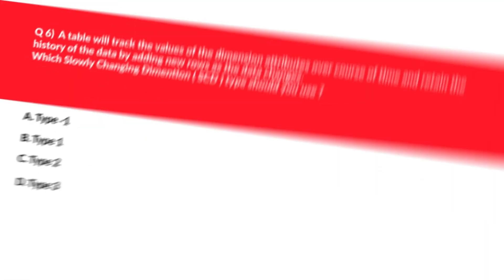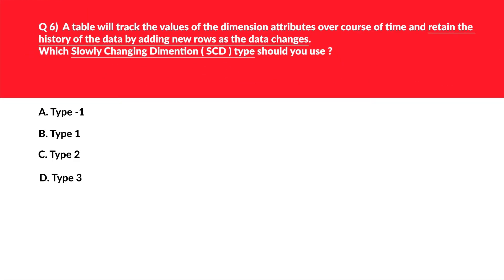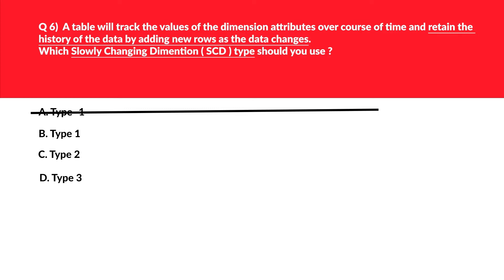This question is about SCD — slowly changing dimensions. Option A — type minus one — there's no such thing as SCD type minus one, so it's invalid. Option B — type one — in SCD type 1 we only preserve the latest values; previous values get overwritten when changes in source data are detected. As per the question we need to preserve historical data, so SCD type 1 won't achieve the solution and we'll reject option B.